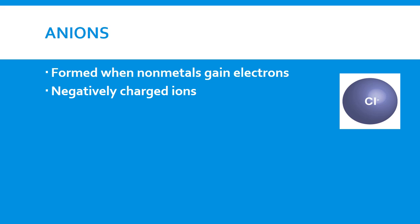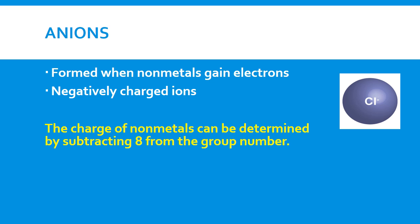Anions are formed when non-metals gain electrons. If they gain electrons, they gain a negative charge, meaning they will have more negative charge than positive charge — hence anions are negatively charged. To determine the size of that charge, take the group number of the element and subtract 8 from it. For example, chlorine is in group 7; subtract 8 from 7, you get negative 1, which is the charge of the chlorine ion. Oxygen is in group 6; subtract 8 from 6, you get a charge of negative 2.